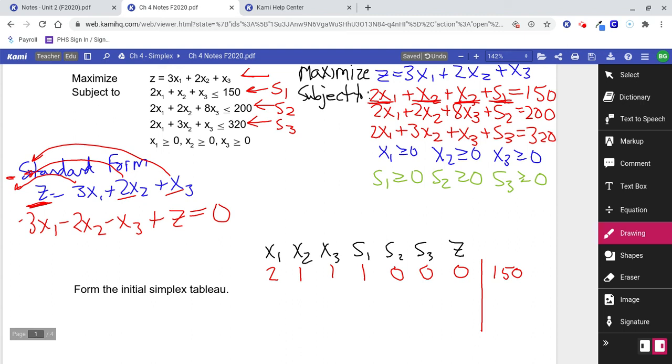We do the same thing for each of those three constraints. The second line right there says 2x1 plus 2x2 plus 8x3. Now, you've got to be careful here. Students will mess this up. But there is no s1 in that second constraint. So, put a 0 for under s1. There is an s2, though. So, we'll put a 1 under the s2. There is no s3. There is no z. And it equals 200. Be very careful here. It's not that hard to do, but people will trip up. And if you trip up any of these numbers, you'll mess up the whole thing.